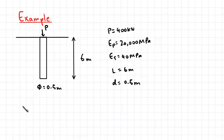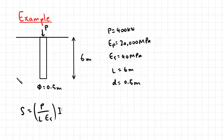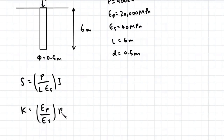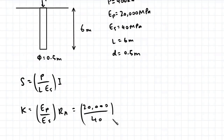The equation for the settlement of a single floating pile is S equal to P over LES multiplied by I. First we need to find the stiffness factor K, which is equal to EP over ES multiplied by RA. That's 20,000 megapascals divided by 40 megapascals, multiplied by RA which is 1 because we have a solid pile. This works out to be 500.